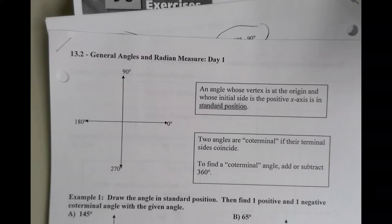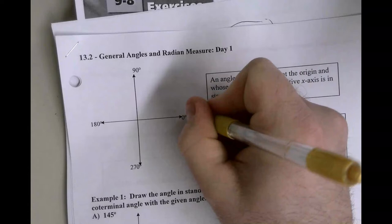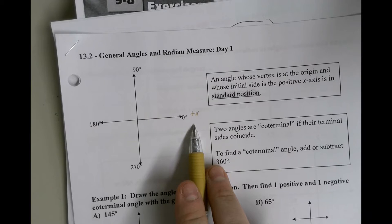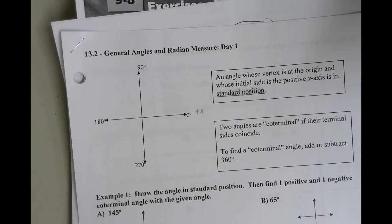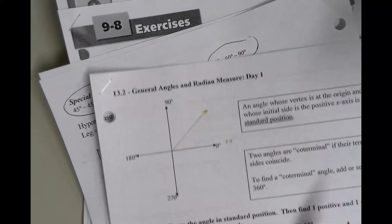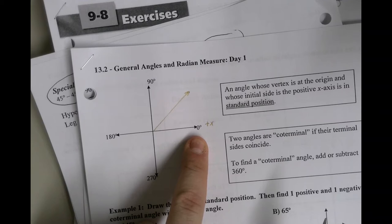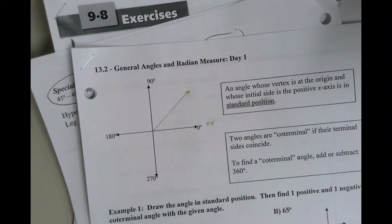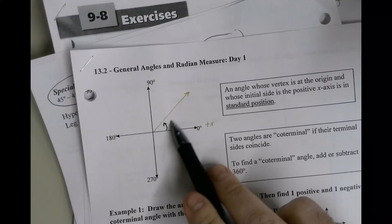The first thing I have to understand is in standard measure of angles, we always measure from the positive x-axis — that's where the angle starts from. So I want to draw just a basic angle. Let's draw 45. 45 is in the first quadrant, and the positive x-axis is where you start the measure from. You would draw a curve from the positive x-axis up to this side of the angle — it's called the terminal side. So that would be a 45 degree angle.